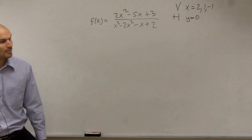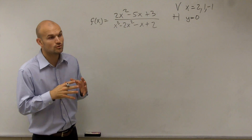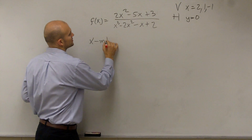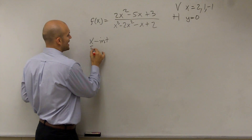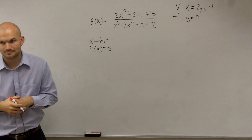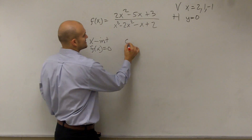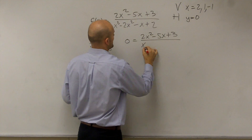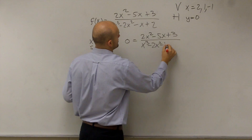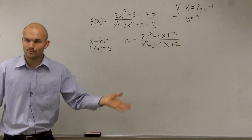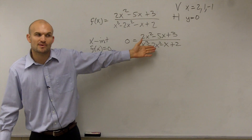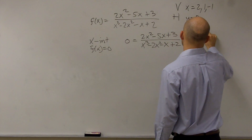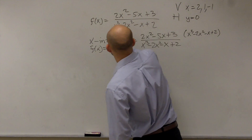So you have y equals 0 as your horizontal asymptote, and vertical asymptotes at x equals 2, 1, and negative 1. The next thing we need to do is find the x-intercept. Remember, the x-intercept is when f of x equals 0. So I set 0 equals 2x squared minus 5x plus 3 divided by x cubed minus 2x squared minus x plus 2. To clear the denominator, you multiply it on both sides.